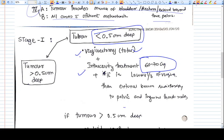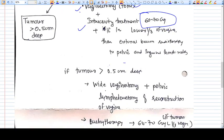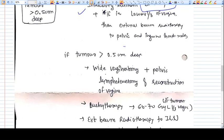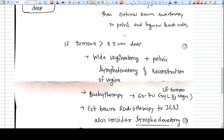You're giving vaginectomy surgical treatment plus radiotherapy - both brachytherapy and radiotherapy. Now if the tumor is more than 0.5 centimeter deep...